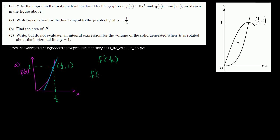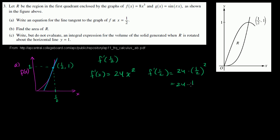So what is f prime of x? f prime of x is just the derivative: 3 times 8 is 24 times x squared, so 24x squared. f prime of one half equals 24 times one half squared, which equals 24 times one fourth, which equals 6. So the slope of this line is equal to 6. I'll use m for slope — that's the convention from algebra.